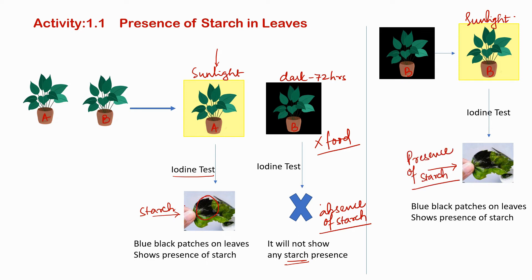Earlier, the same plant kept in the dark did not show any presence of starch. After keeping it in sunlight, it showed the presence of starch — we can see blue and black color patches. This means in the presence of sunlight, plants make food. Without sunlight they cannot make food, and food means carbohydrates stored in the form of starch.